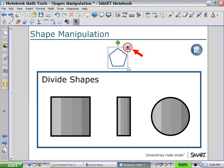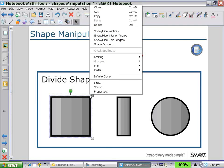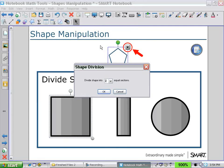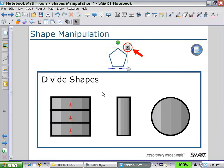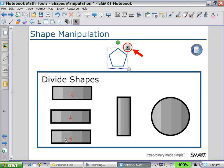So in the first case, we'll divide the square, selecting shape division and choosing three sections. We can divide our square into thirds, and we can separate them to show the students the different sections.